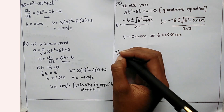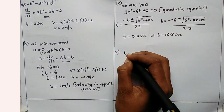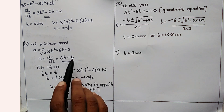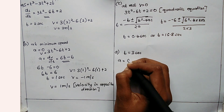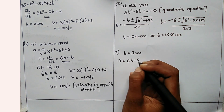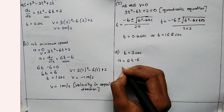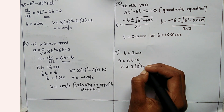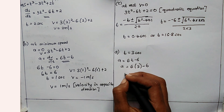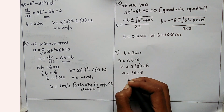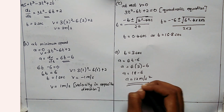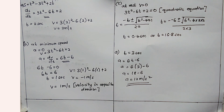Part (d): find the acceleration when t = 3 seconds. From part (b), acceleration = 6t − 6. Substituting t = 3: a = 6(3) − 6 = 18 − 6 = 12 meters per second squared. Those are the units for acceleration.